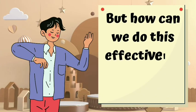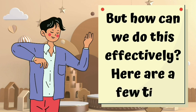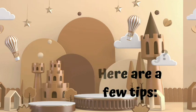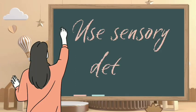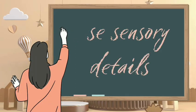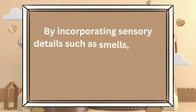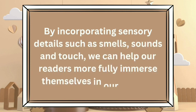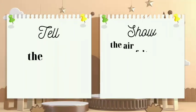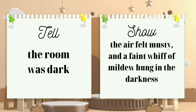But how can we do this effectively? Here are a few tips. Tip 1: Use Sensory Details. By incorporating sensory details such as smell, sounds, and touch, we can help our readers more fully immerse themselves in our stories. For example, instead of saying the room was dark, we could say the air felt musty and a faint whiff of mildew hung in the darkness.